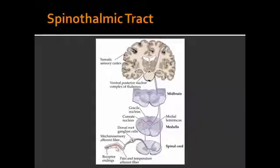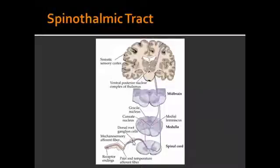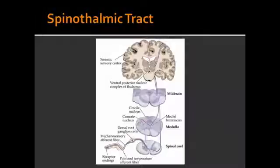In the spinothalamic tract, these neurons will make their way all the way up to the somatic sensory cortex. Starting off with the receptor, these sensory nerve endings have A-delta and C fibers. These neurons will relay this information up to the cell body in the dorsal root ganglion, and then it will make its way to the spinal cord at that level, where it's going to have its first synapse.